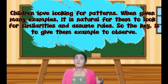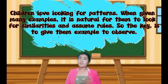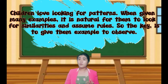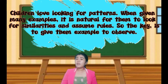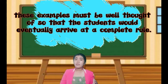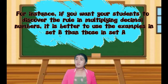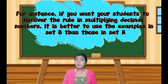We all know that children love looking for patterns when given many examples. It is natural for them to look for similarities and assume rules. So the key is to give them examples to observe. These examples must be well thought out so that students would eventually arrive at a complete rule. For instance, if you want your students to discover the rule in multiplying decimal numbers, it is better to use the examples in Set B.